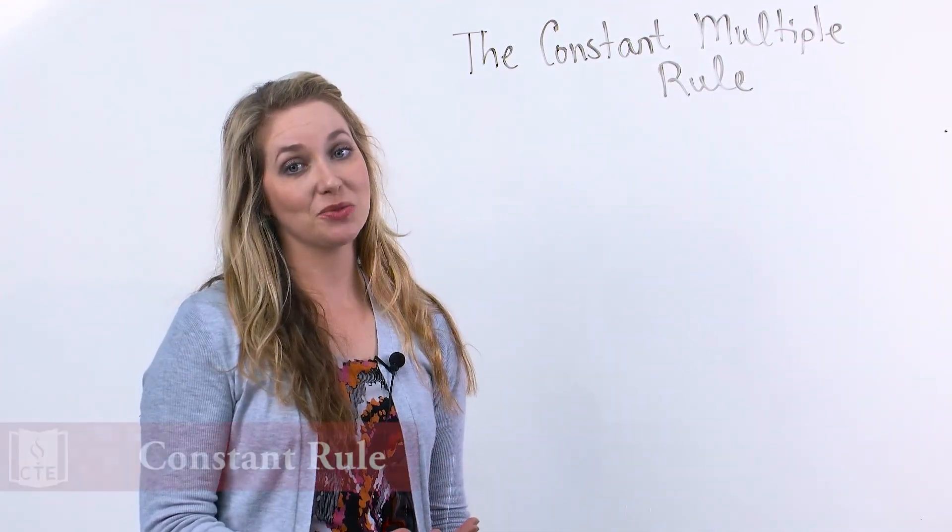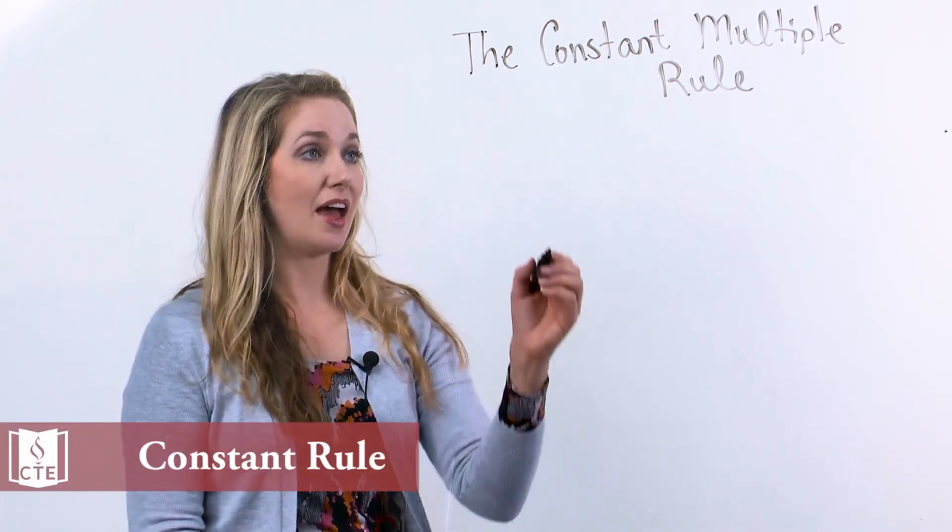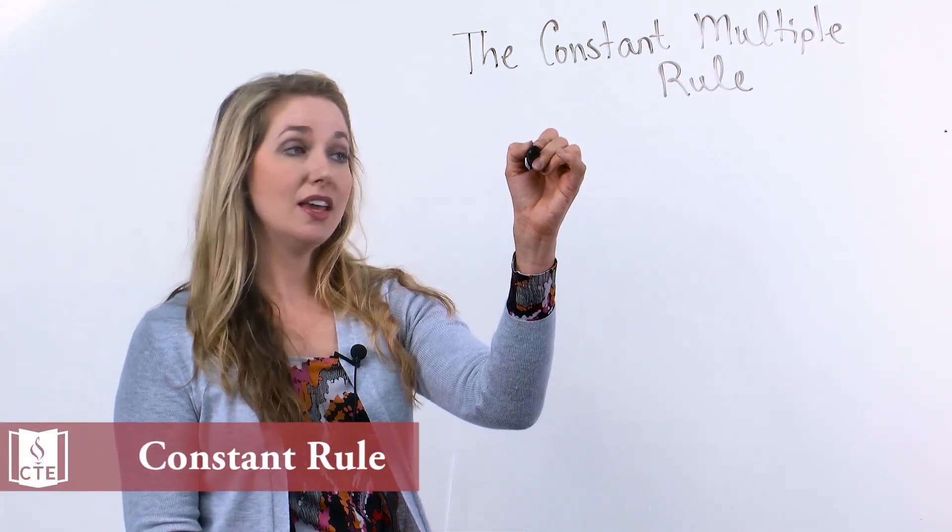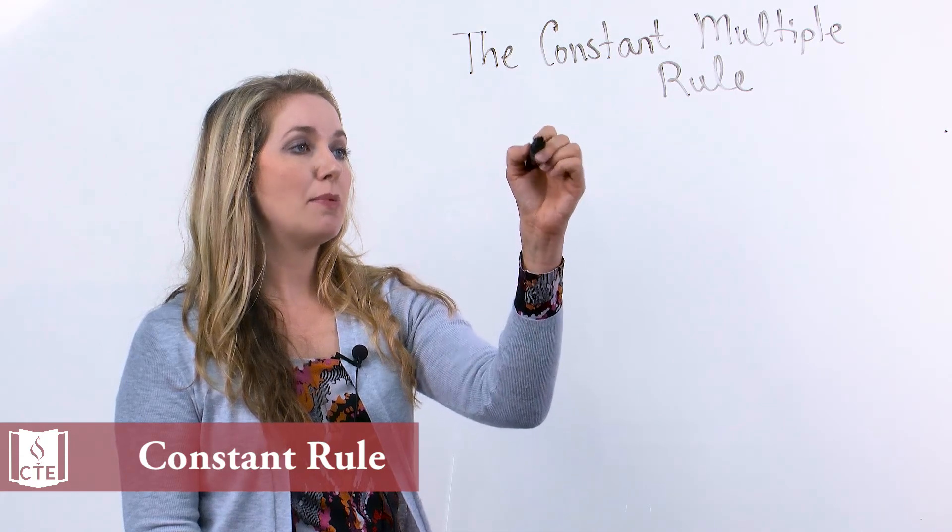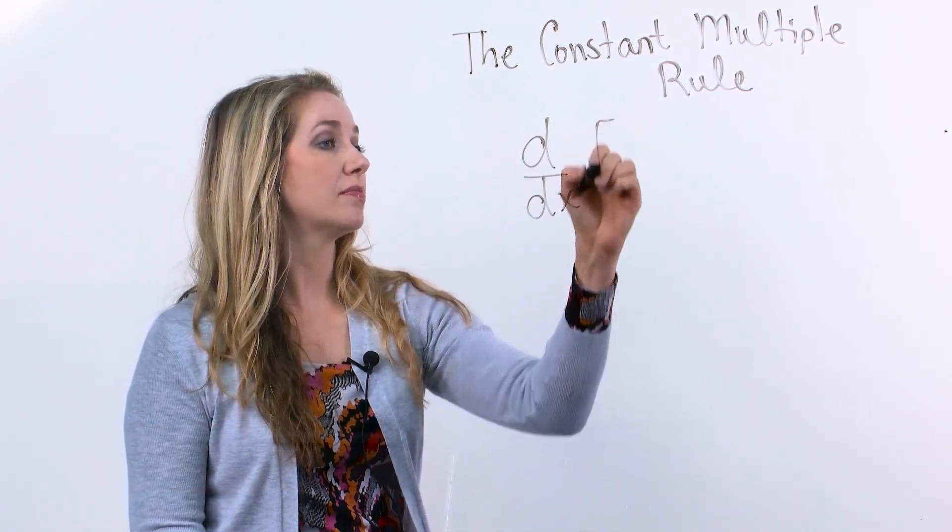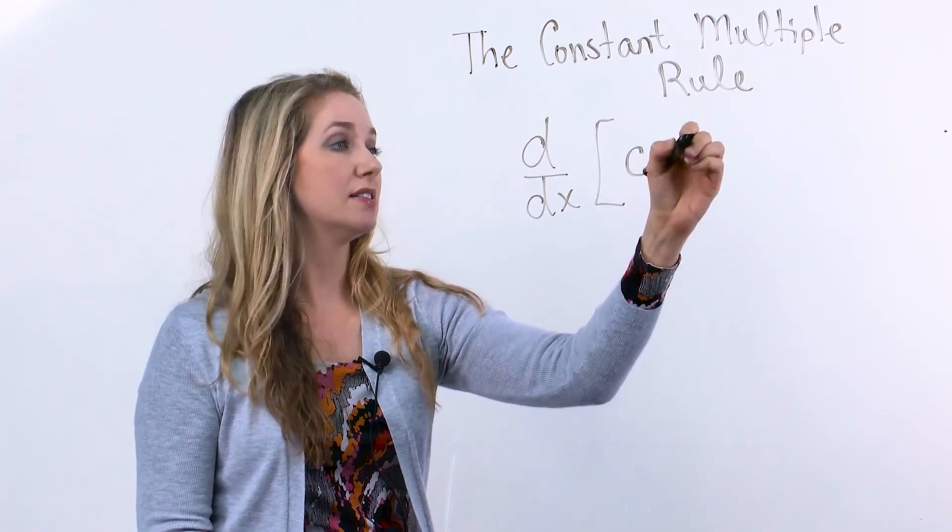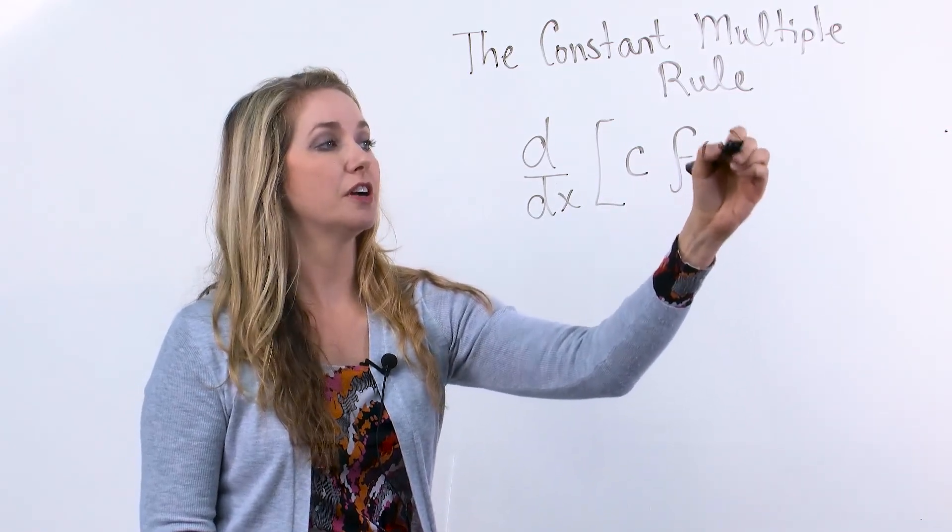Now you've had the constant rule. This is slightly different from that because what we have here is we want to find the derivative of a constant times another function.